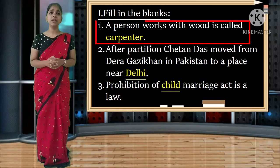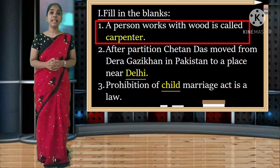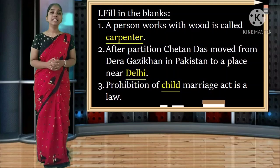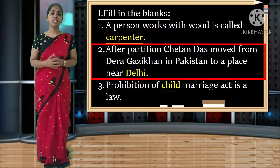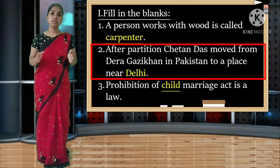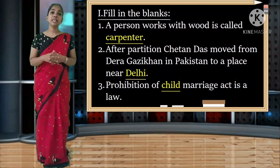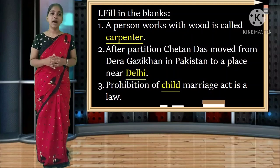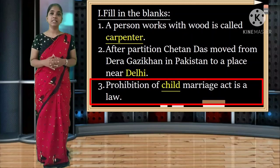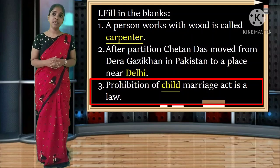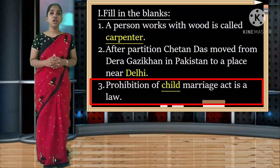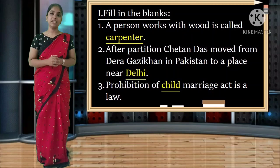Fill in the blanks. First: a person who works with wood is called Carpenter. Spelling: C-A-R-P-E-N-T-E-R. Second: after partition, Chetan Das moved from Dera Ghazi Khan in Pakistan to a place near Delhi. The answer is Delhi. Third: prohibition of child marriage act is a law. The answer is child. Spelling: C-H-I-L-D.